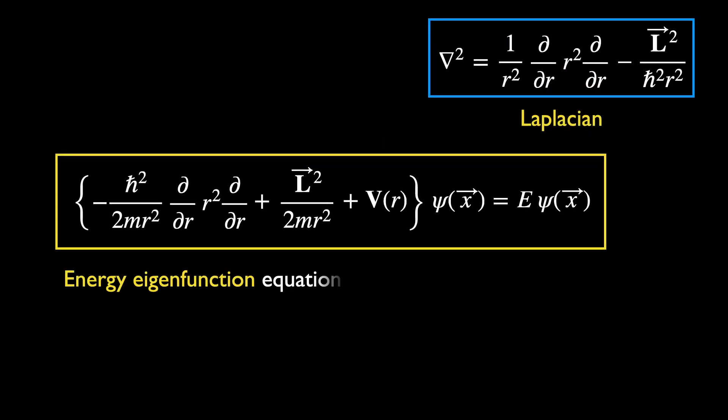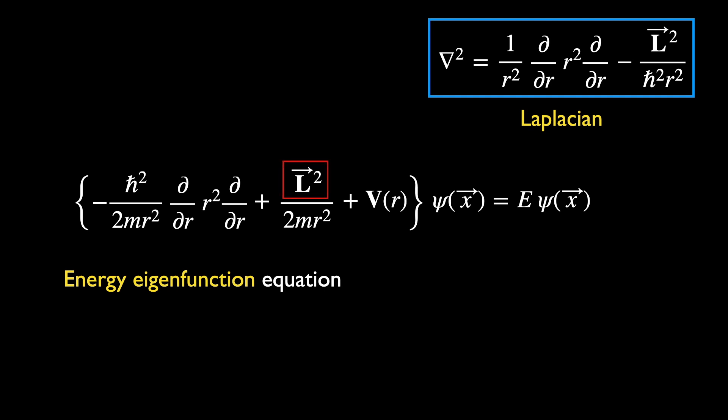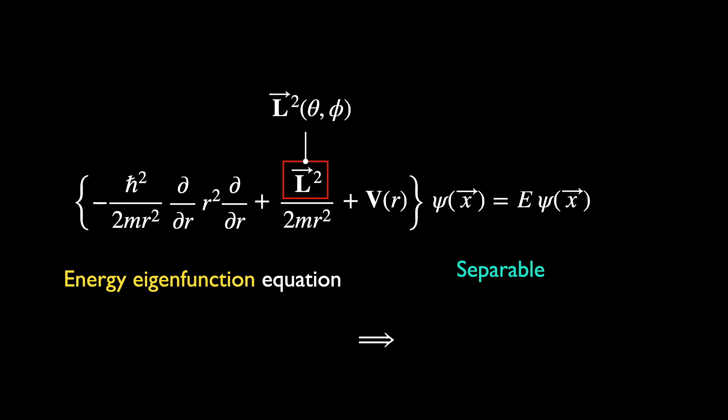Thus, we have the energy eigenfunction equation in spherical coordinates. Its relation to the operator L-square is made explicit by the replacement of the Laplacian in the blue box. It carries all the angular variables. This differential equation is therefore separable between the radial and the angular variables. This allows us to write down solutions for psi in terms of such products.